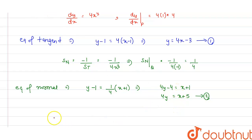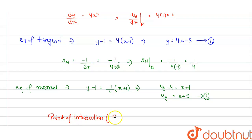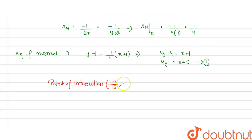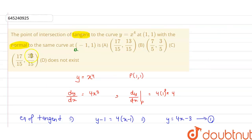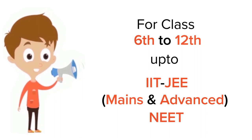We can find the values of x and y, which will be the point of intersection. The point of intersection is (17/50, 23/15). So we got the point of intersection of the tangent and the normal. Our option C is the answer.